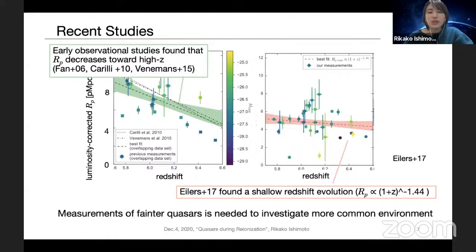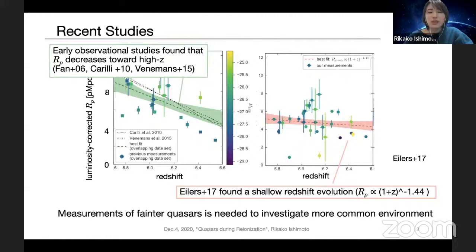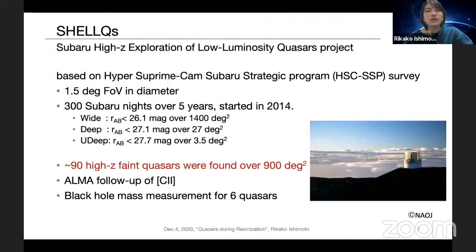So we measure the proximity zone sizes of fainter quasars, which are thought to be more common in the universe. We use quasars which are discovered in Subaru High-z Exploration of Low-Luminosity Quasars project, SHELLQs. SHELLQs project is based on HSC-SSP survey. Using the wide field of view of HSC, we have discovered around 90 high-z faint quasars. And some follow-up observations such as C IV or ALMA are conducted.